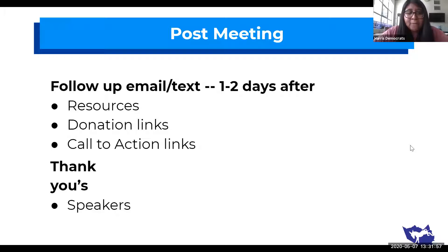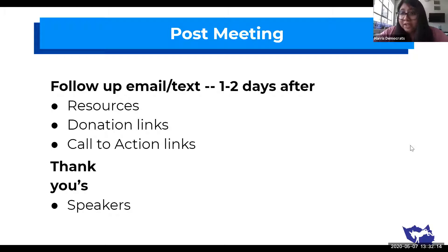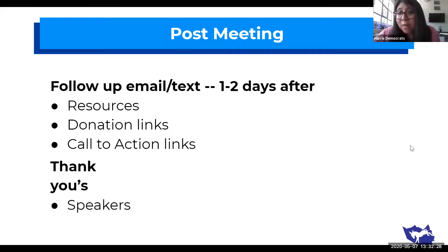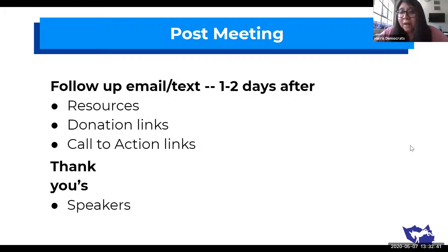Post-meeting, you're going to want to do a follow-up email or text. It's typically best to do this one or two days right after — we usually send out our follow-ups the day after. Make sure to include resources, anything that was promised during the meeting, donation links if appropriate, and some call-to-action links. At the Harris County Democratic Party, we are hyper-focused on getting Trump out of office, but most importantly on getting vote-by-mail applications to those who are eligible. So whenever we get a chance, we throw in some phone banking links, because that is our goal — talking to voters every single day to make sure they know they can vote by mail if eligible.